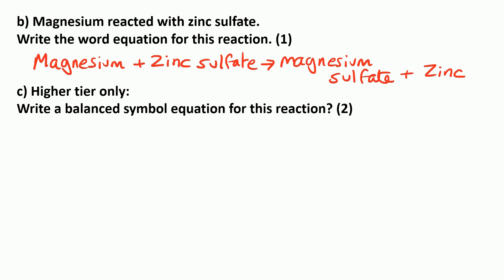Or you could say it displaces the sulfate, so that makes magnesium sulfate and zinc on the right. If you're studying for the higher tier paper, you could be asked to write a balanced symbol equation for this reaction. So that would be Mg for magnesium, ZnSO4 for zinc sulfate.